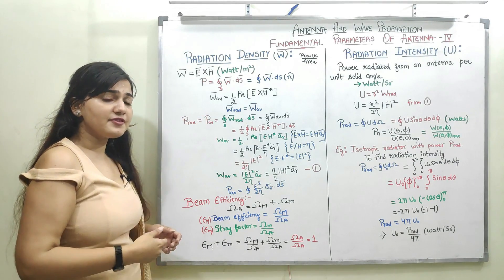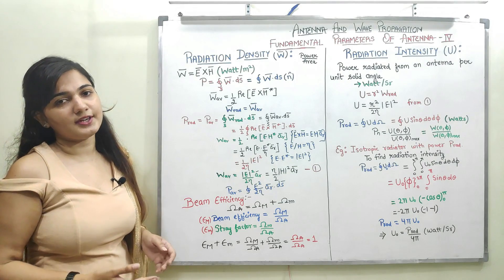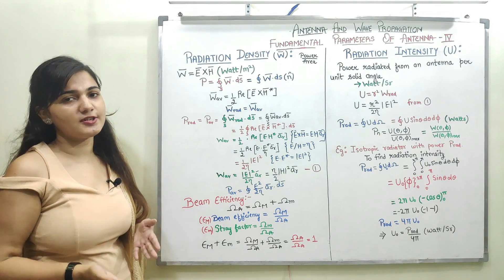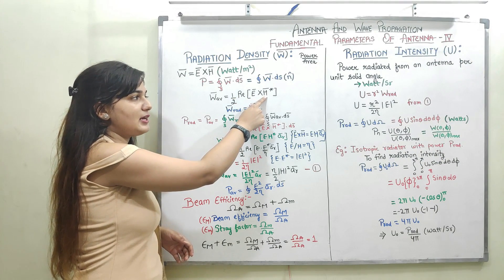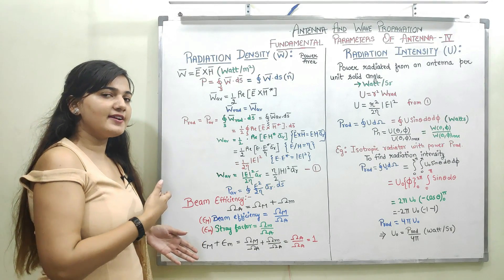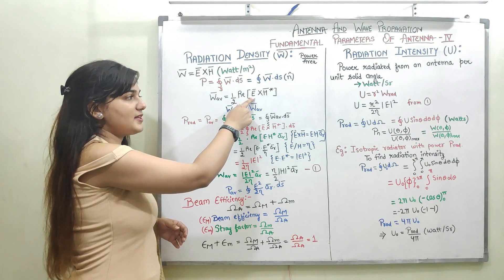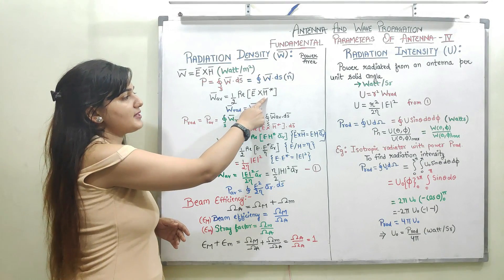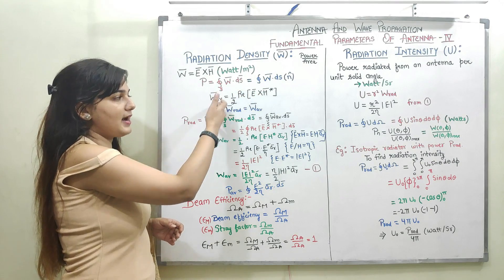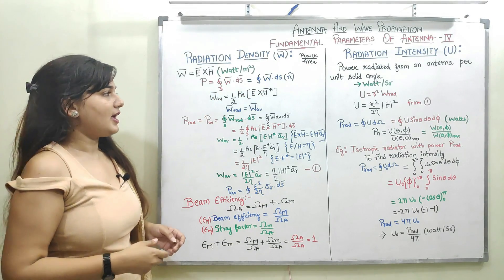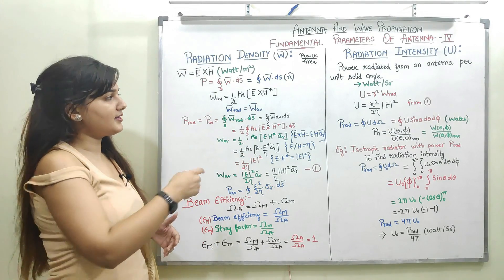The average power density can be represented by half of the real part of E cross H conjugate, where E and H represent the electric and magnetic field components. We are taking the maximum values of E and H here. For average power density we require the RMS value of E and H — RMS value of E is E upon root 2 and RMS value of H is H upon root 2. When these are multiplied, the factor of one-half appears. When we use RMS values directly, we do not require this one-half factor.